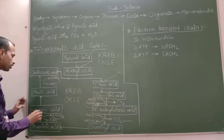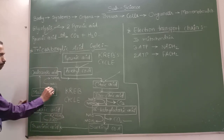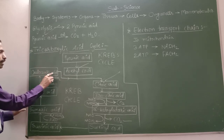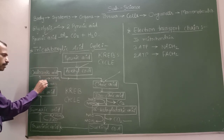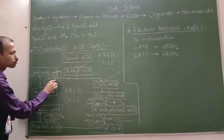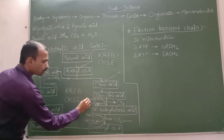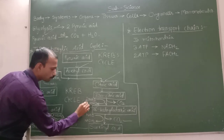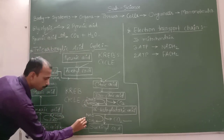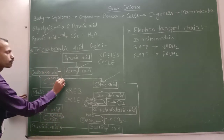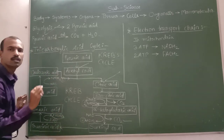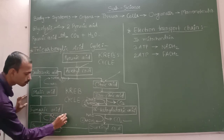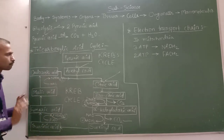Fumaric acid is further converted into malic acid, and malic acid is converted into oxaloacetic acid; here NAD is again reduced to NADH₂. In total, six molecules of NADH₂ and two molecules of FADH₂ are formed during this Krebs cycle.